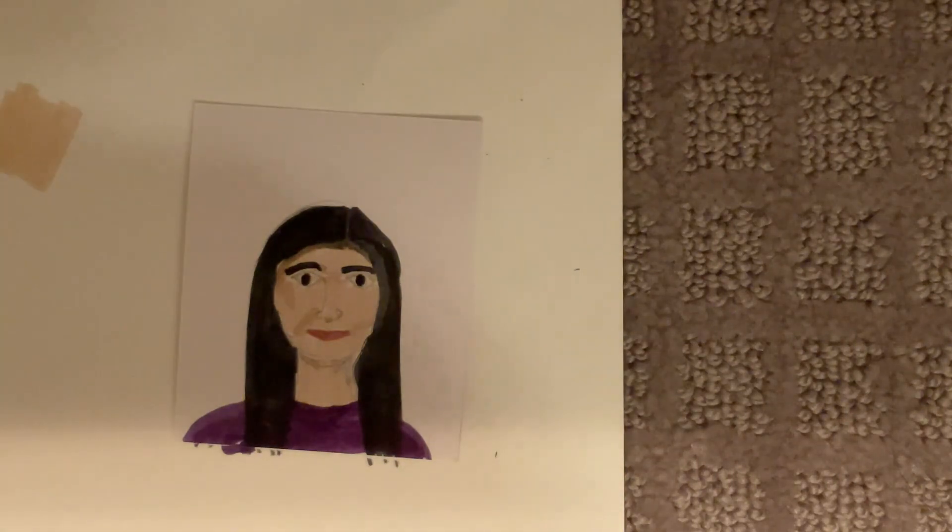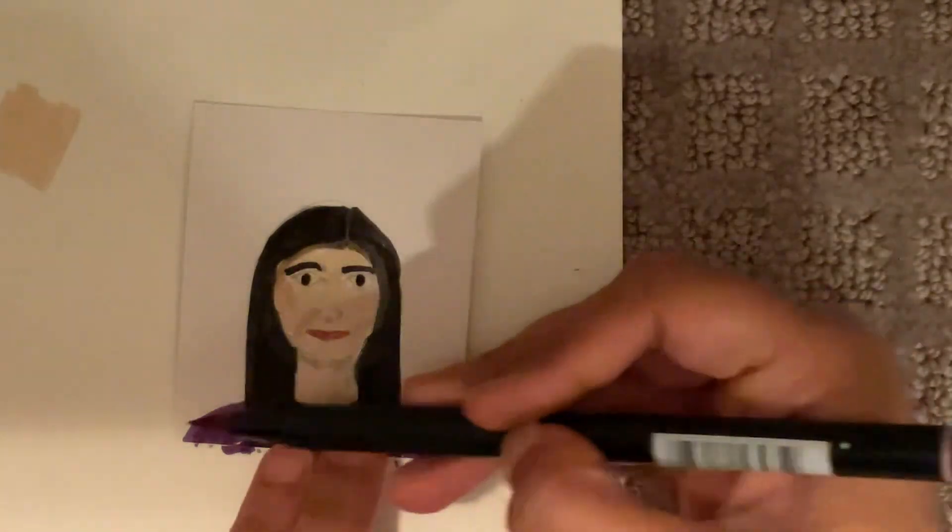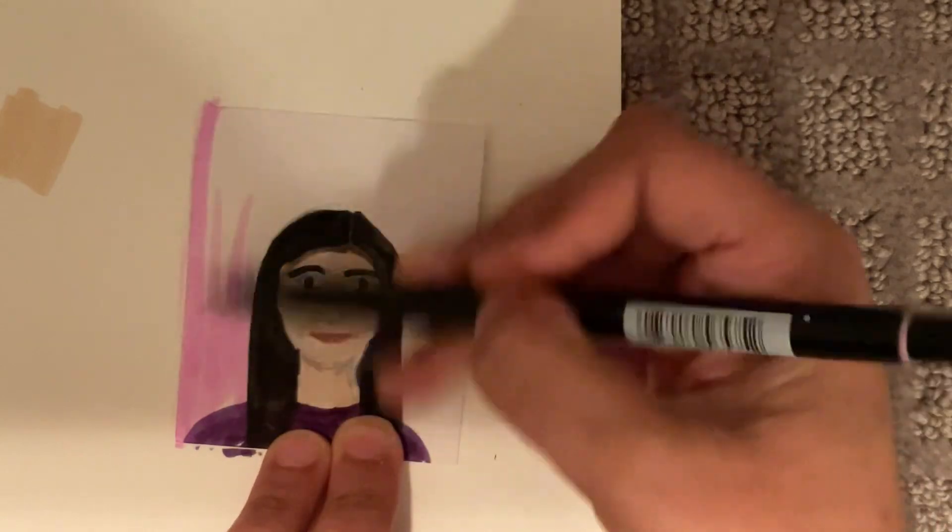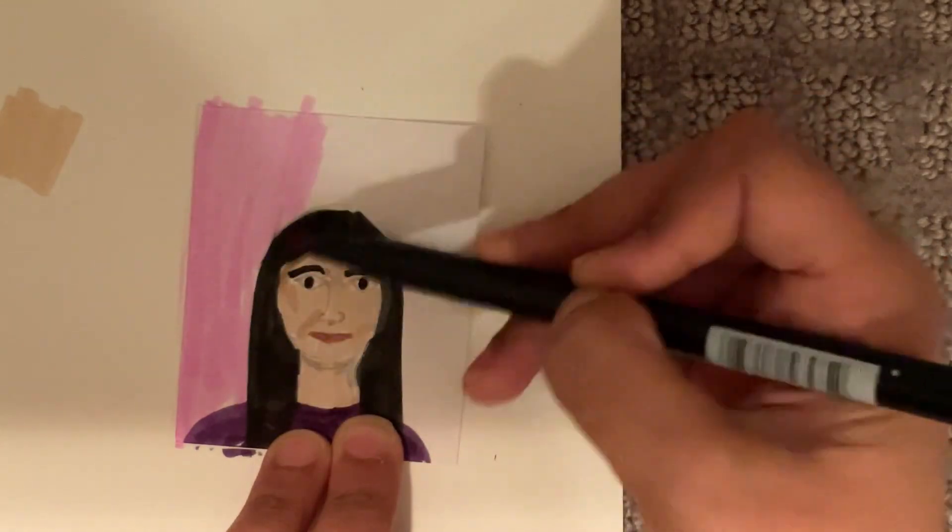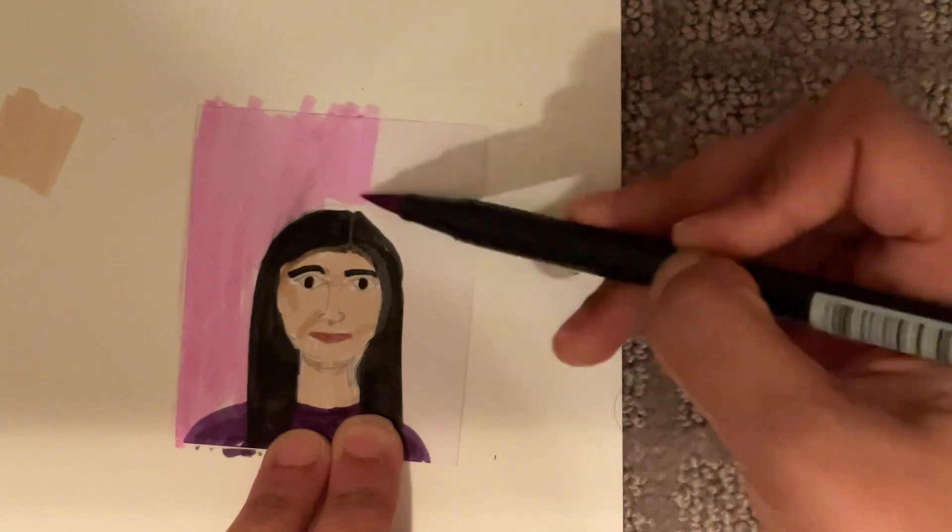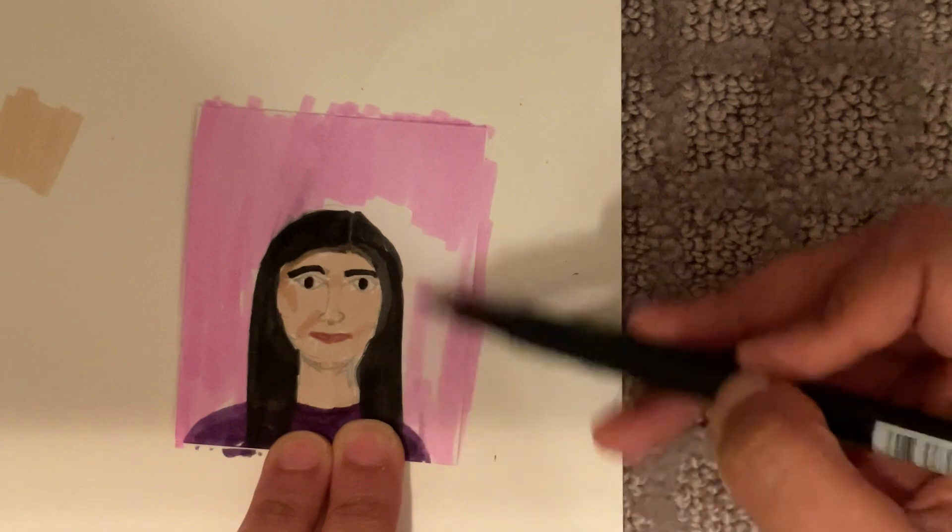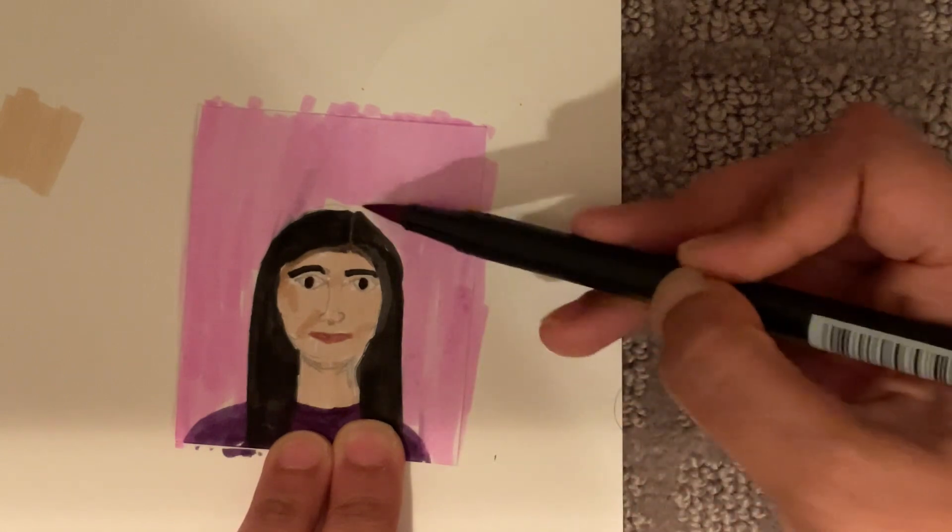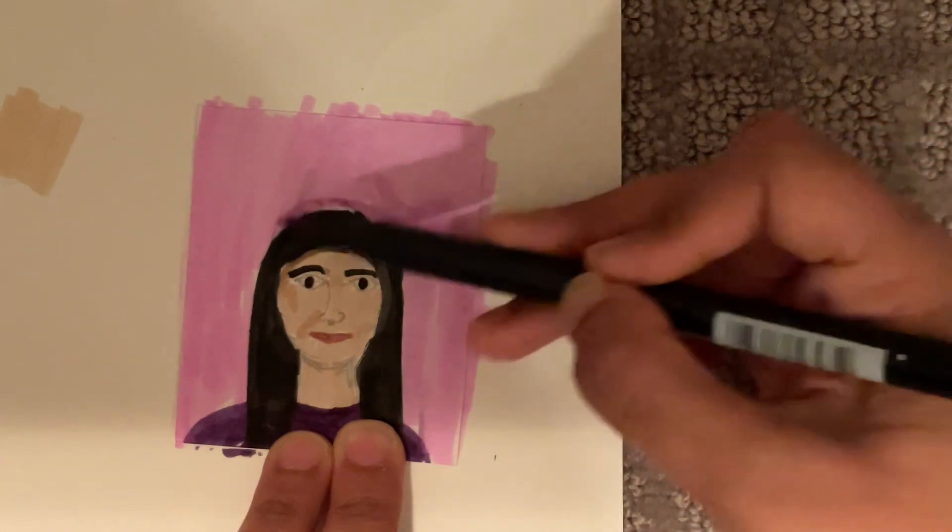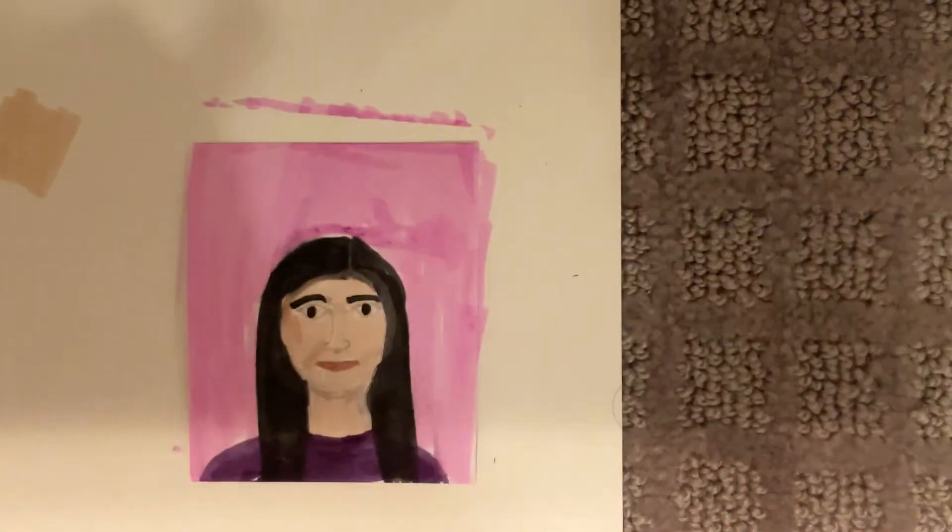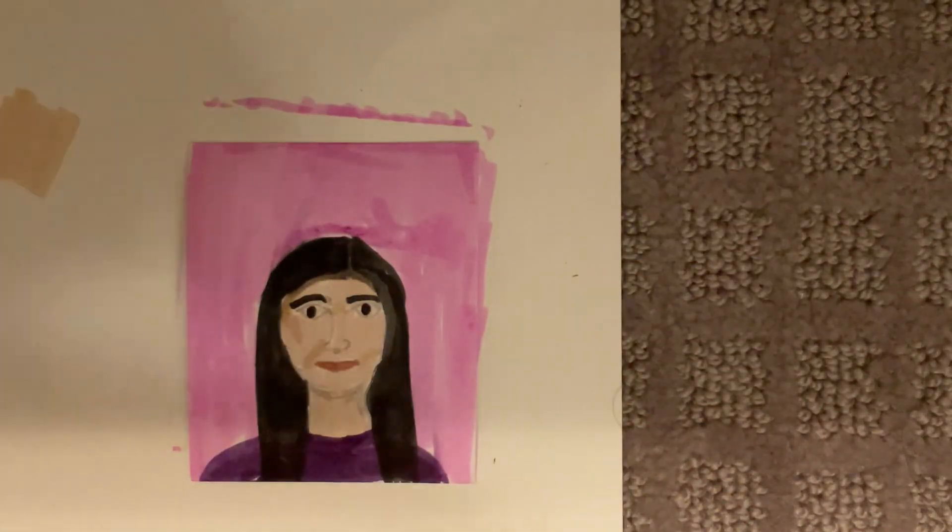And then I'm going to color my background. This is a brush tip marker so it covers more surface. The markers you're using are either fine tip or bold tip, so it's not going to get done as fast.